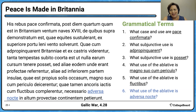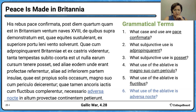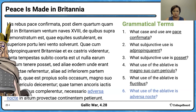For 'adversa nocte': whenever you see words like 'nocte,' 'anno,' 'hora,' or 'die' in the ablative, start thinking time when or time within which. They sought the continent during the adverse night — it's hard to sail at night — so this is an ablative of time when.